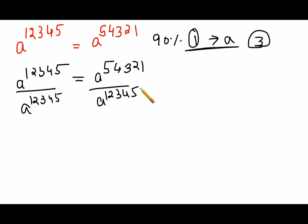Remember, when the bases are same and indices are different and they're getting divided, you put it in the same base and the indices get subtracted. So this becomes 1, and this becomes a^(54321 - 12345). That gets you a^41976.